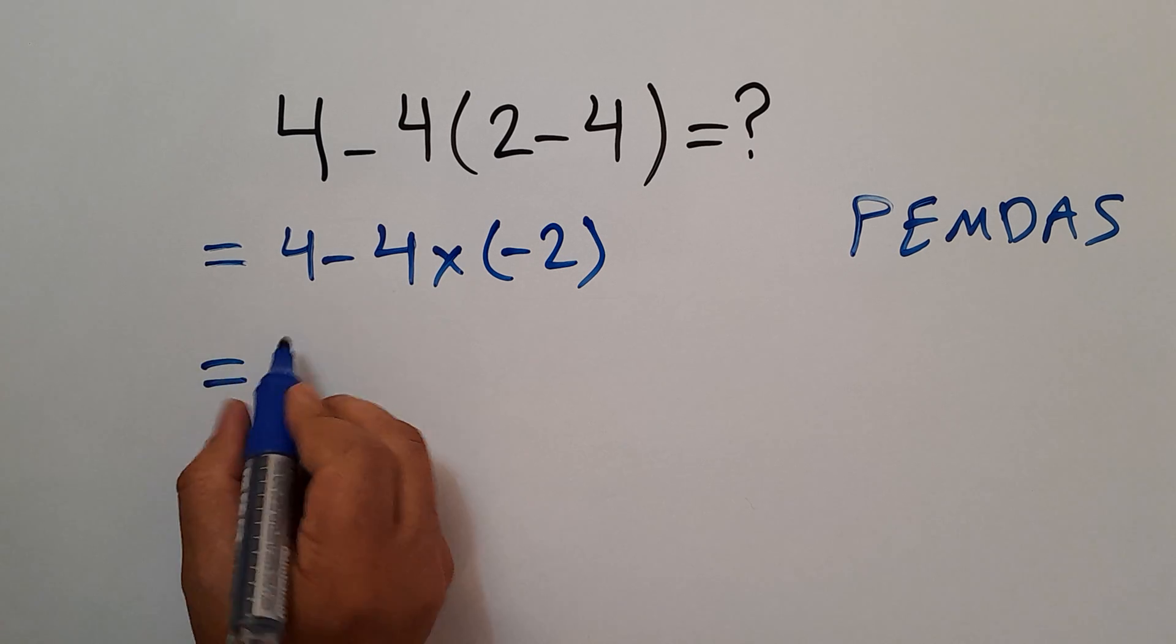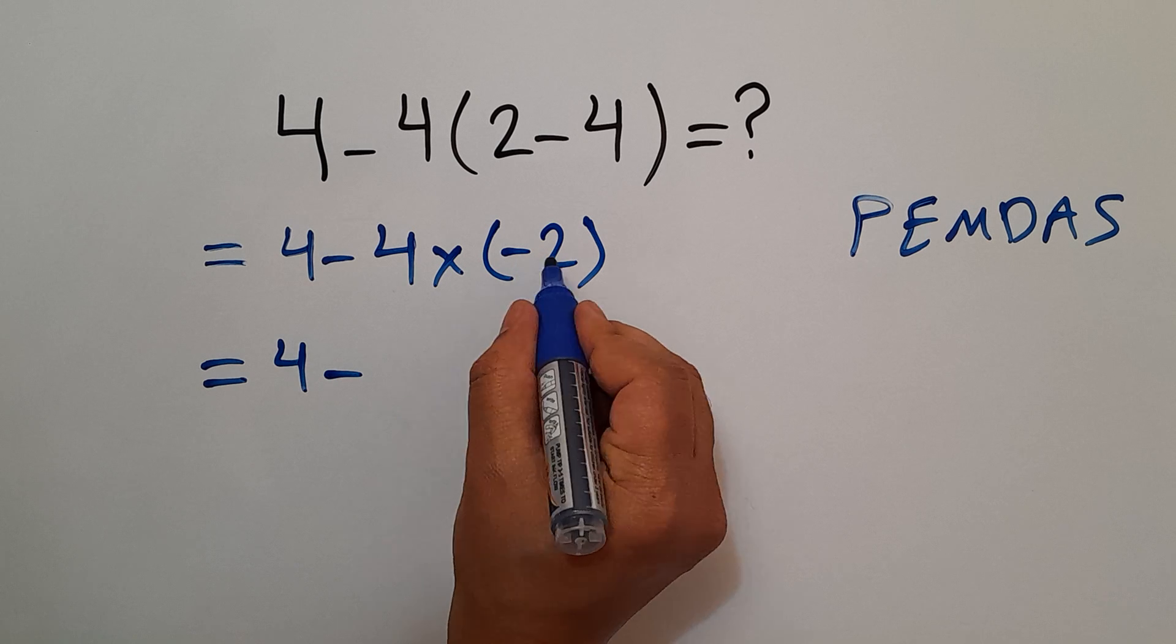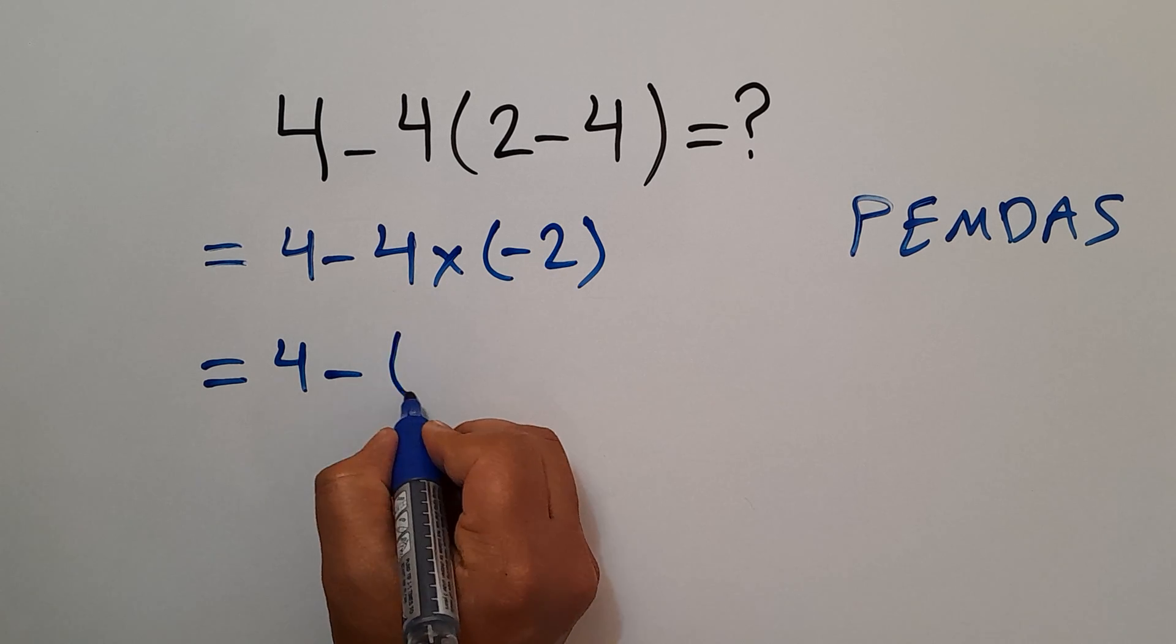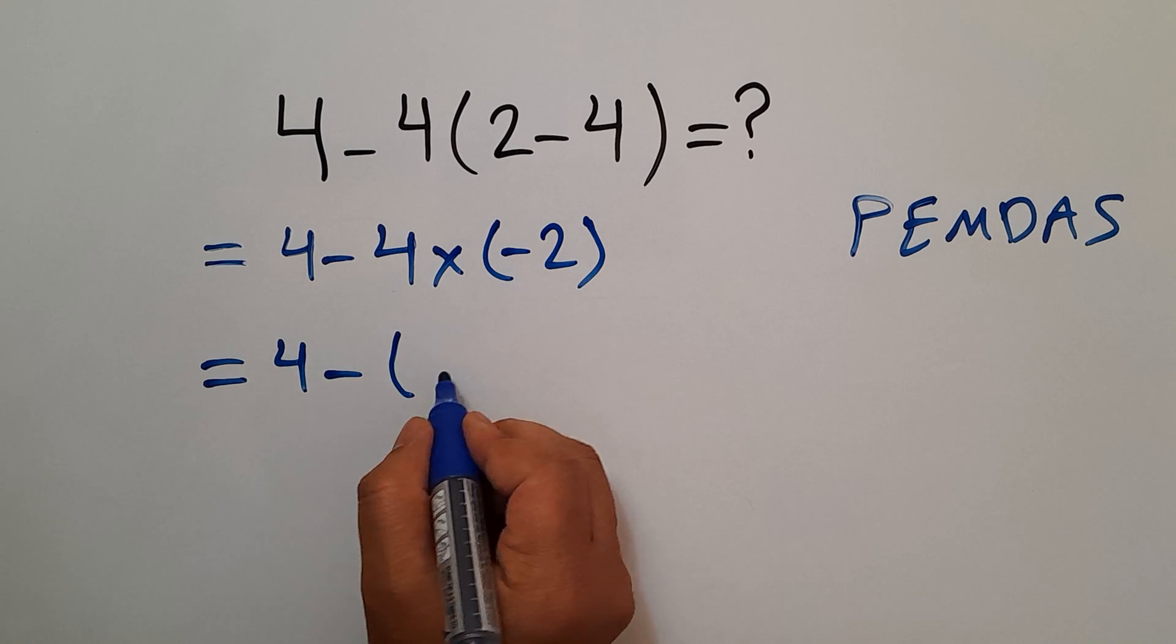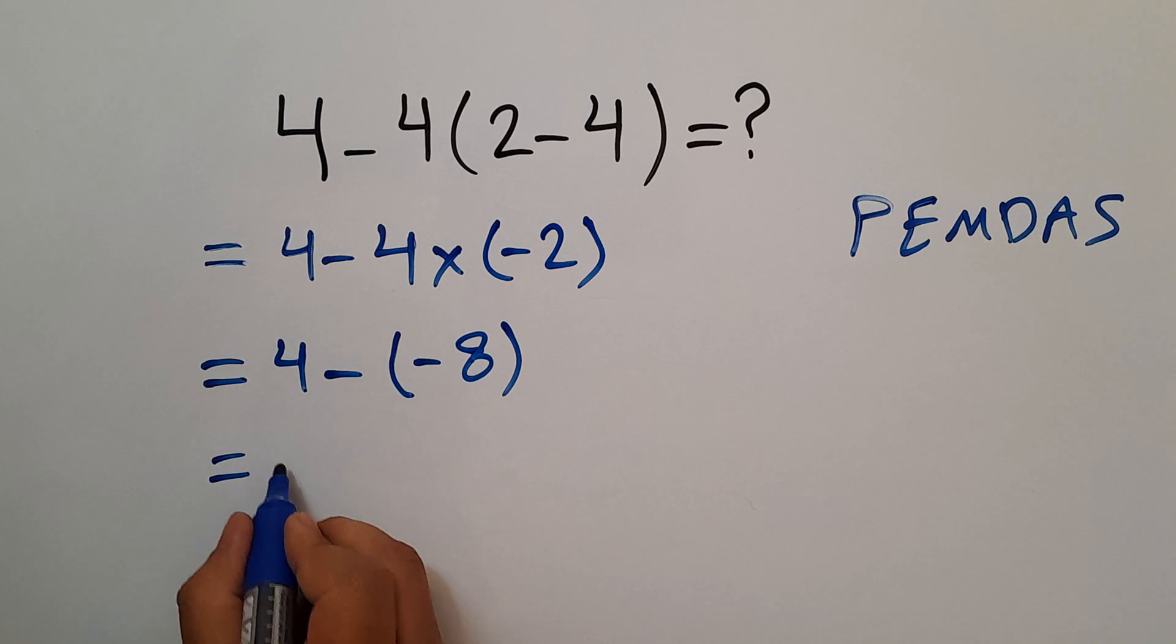4 minus 4 times negative 2. 4 times negative 2 gives us negative 8, and this is equal to...